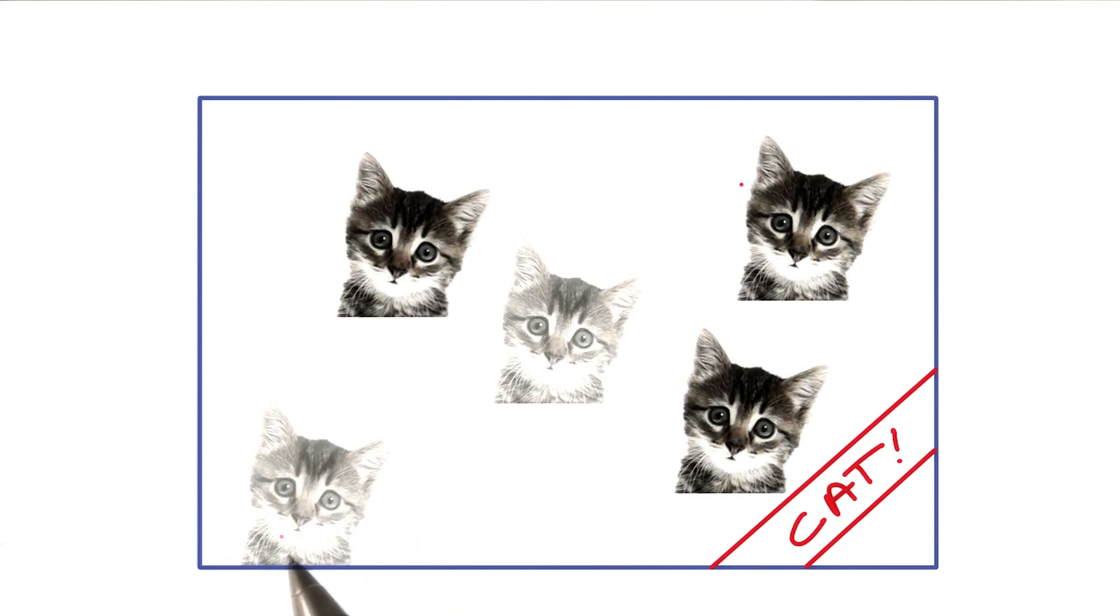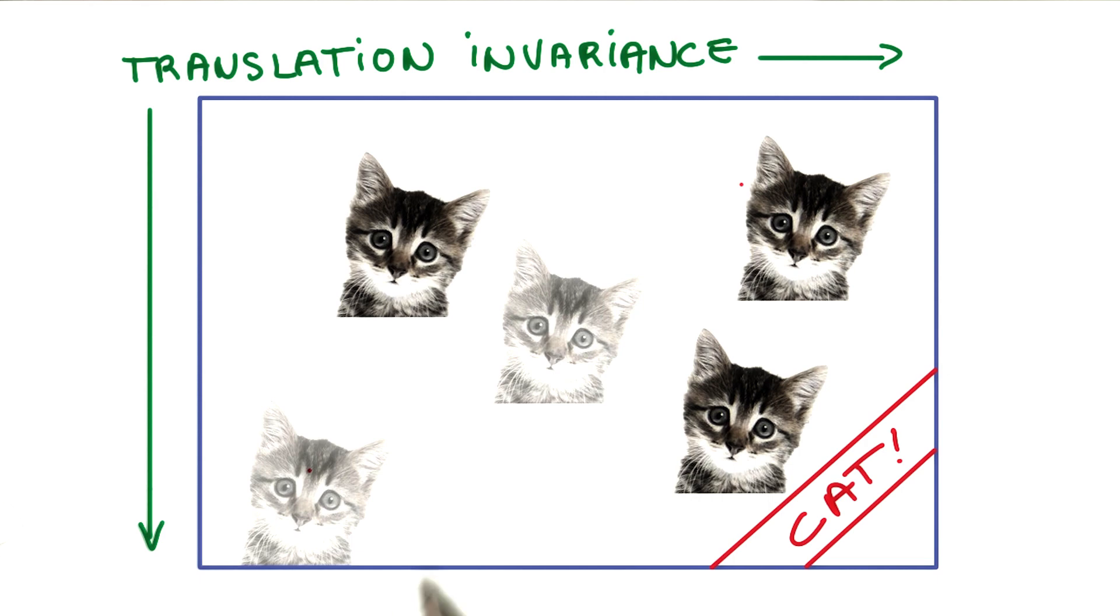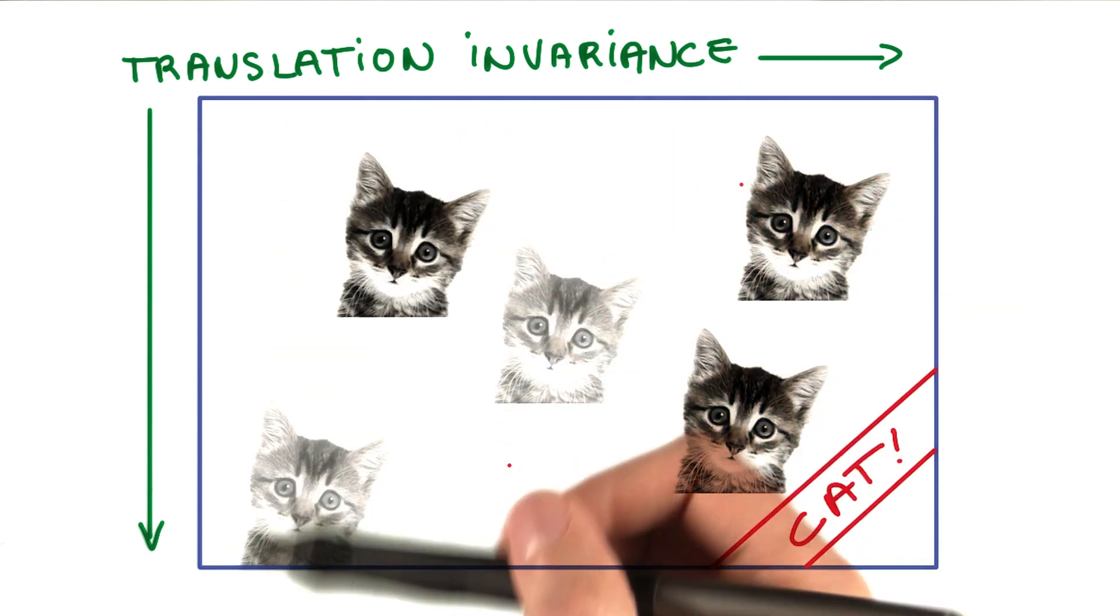If your network has to learn about kittens in the left corner and about kittens in the right corner independently, that's a lot of work that it has to do. How about you tell it instead explicitly that objects in images are largely the same whether they're on the left or on the right of the picture? That's what's called translation invariance.